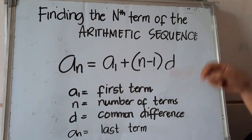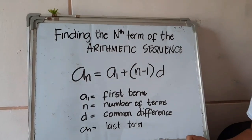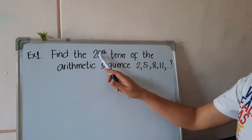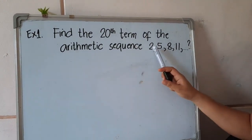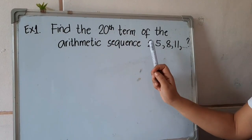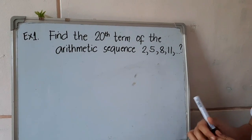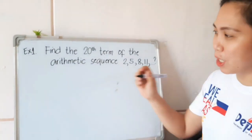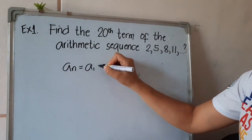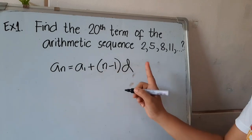With this formula, we will be able to find the 20th term, the 124th term, or any term we want. Going back to our previous example: find the 20th term of the arithmetic sequence 2, 5, 8, 11, and so on. We already have our formula: a_n = a_1 + (n - 1) × d. You just substitute all the given values.